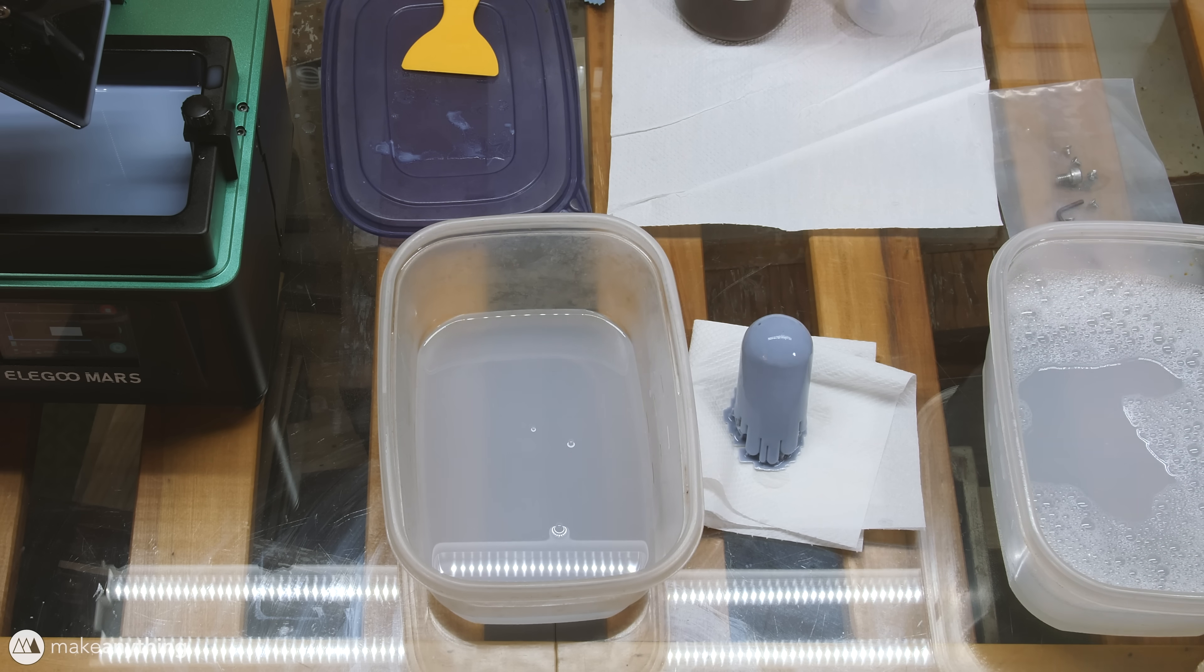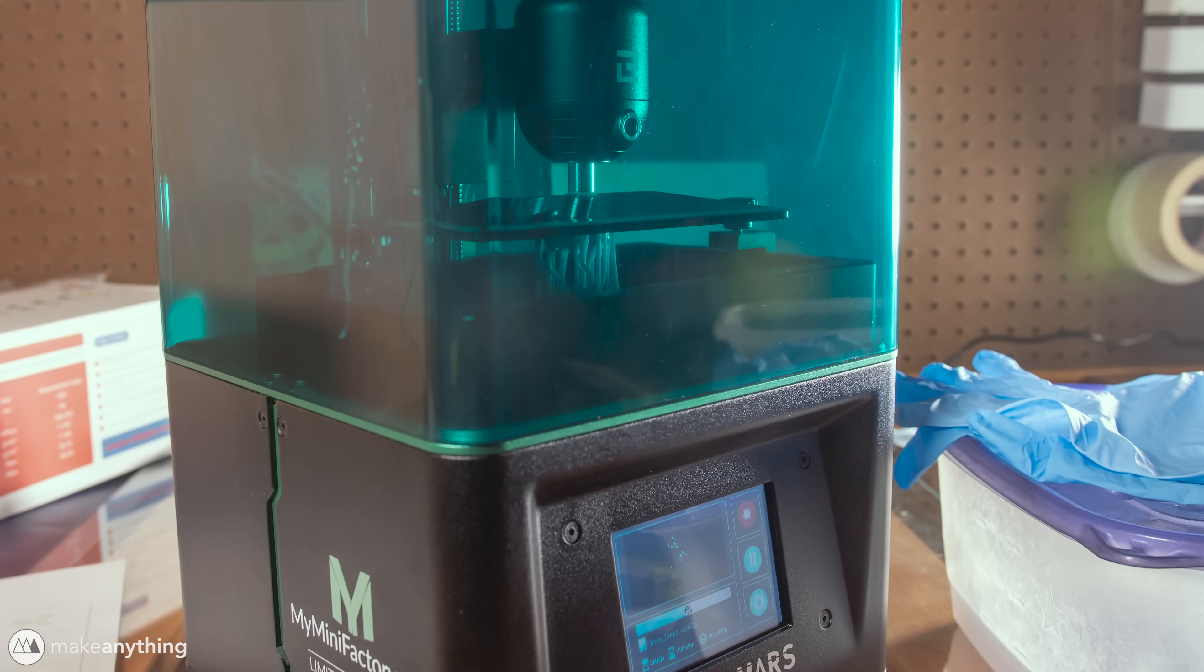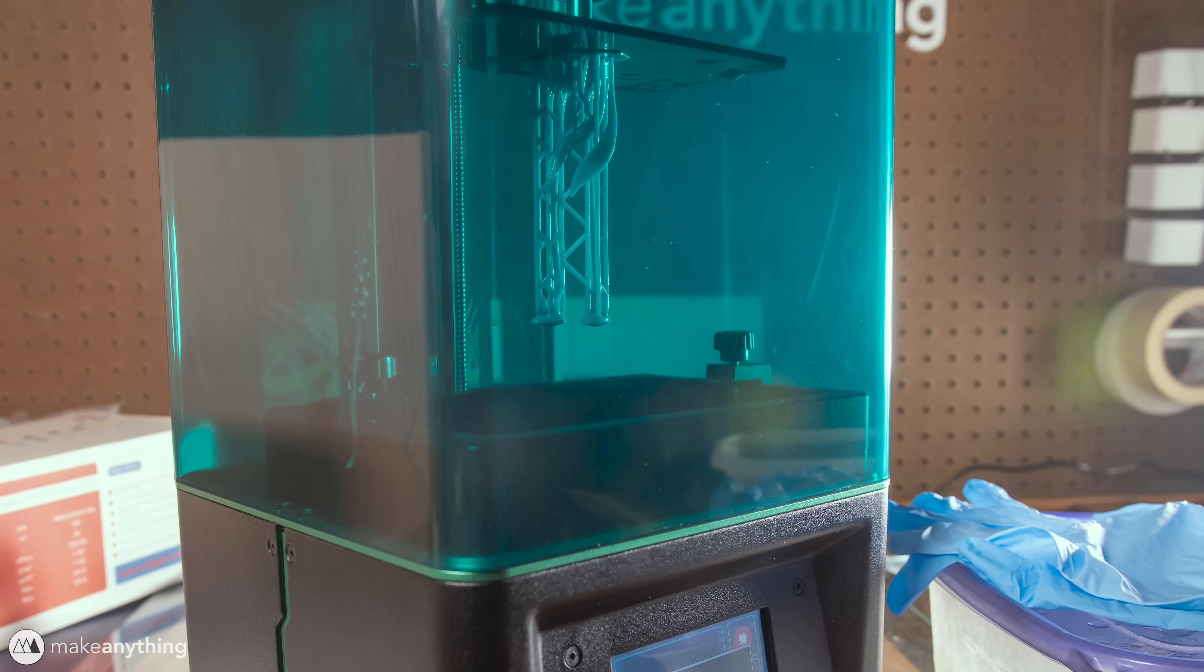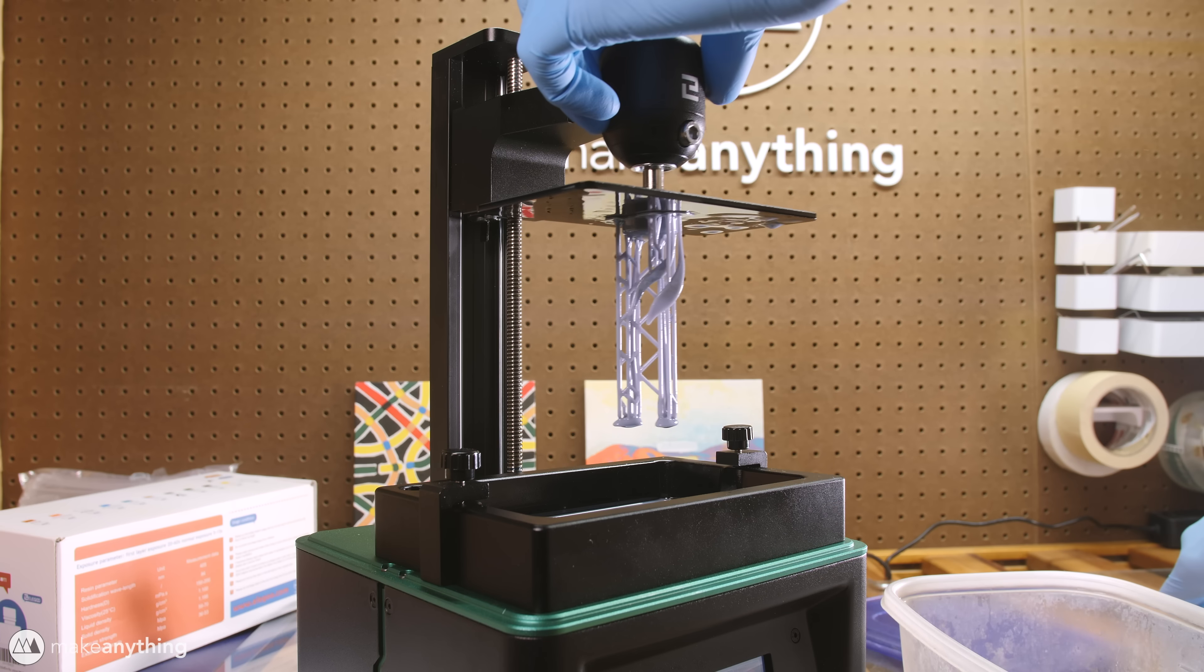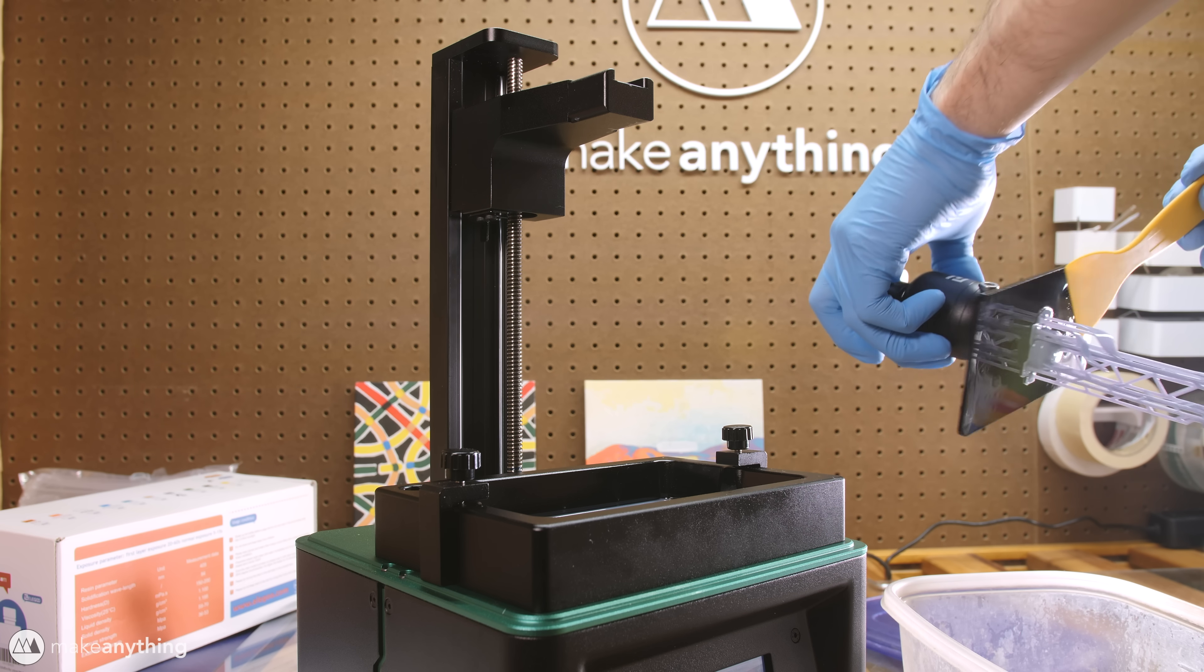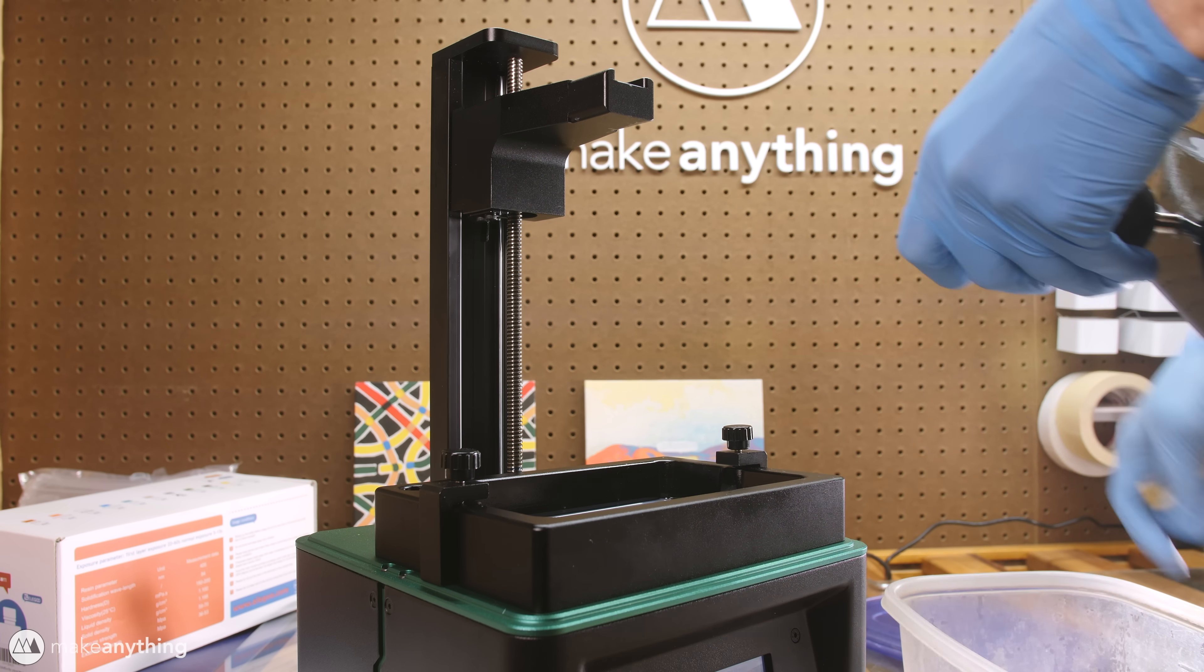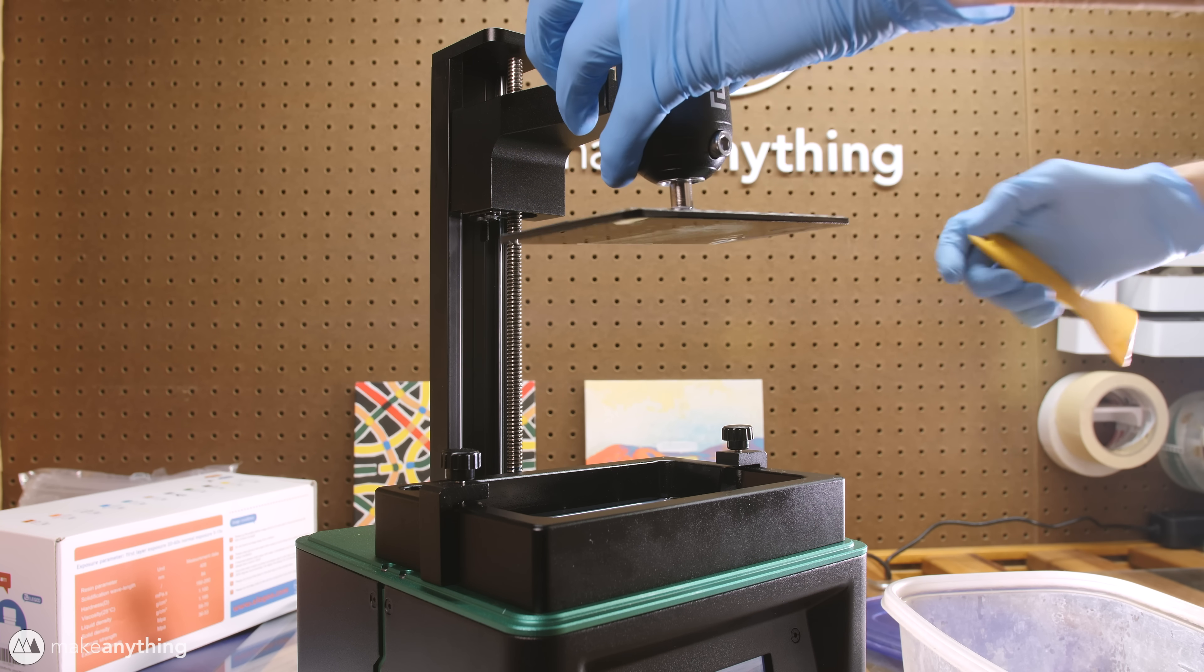After that first successful print I went ahead and immediately ran my second print where I combined the legs and the ears into one single model and I was overjoyed to get a second successful print back-to-back. From there I went ahead and followed the same procedure as the first print rinsing it off in alcohol and warm soapy water. And now we just have to expose the models to some UV light to fully cure the resin.